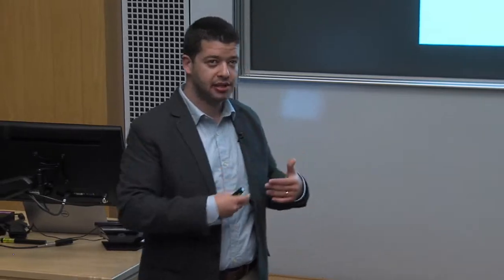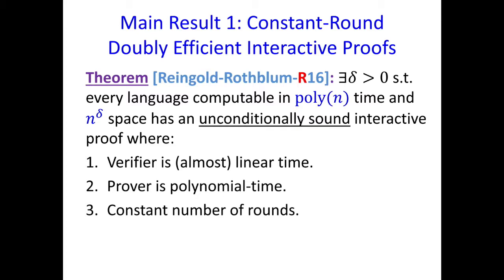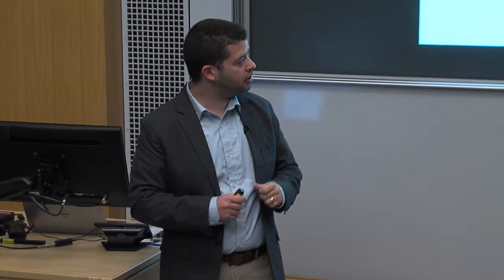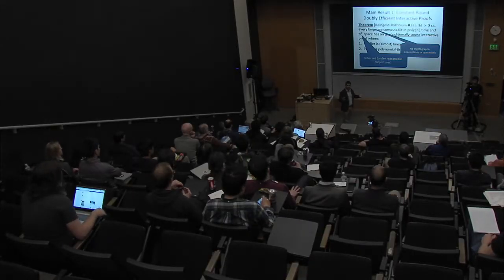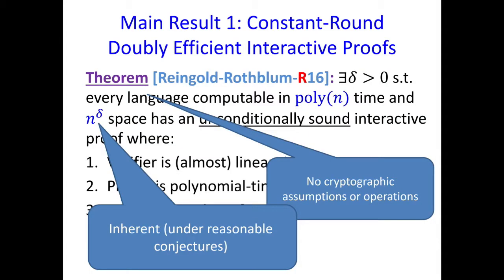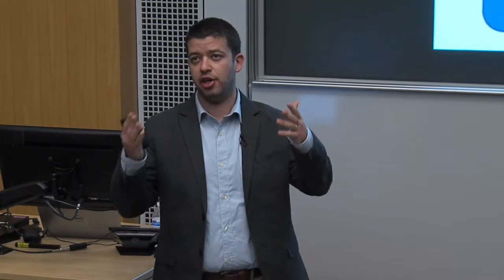I also wanted to emphasize that for this result, we're not making any type of cryptographic assumption — in particular, we're not using any kind of expensive cryptographic operations like public key encryption. This is unconditional. I also wanted to mention that the fact that we're limited to a bounded amount of space is really inherent under some very reasonable complexity theoretic conjectures. You could hope to improve the constant delta up to one, and that's something that we're actively working on. I want to tell you a little bit about how we proved this result — the high-level idea.